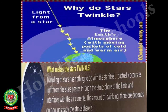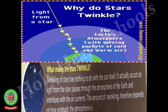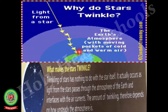Stars are generally spherical in shape, but they appear to be twinkling. This twinkling is due to atmospheric refraction — stars twinkle due to refraction of light. The light coming from a star has to cover a very large distance, and when it enters the atmosphere of Earth, it suffers multiple refractions due to different densities of different layers of Earth's atmosphere. Due to this, the light follows a zigzag path, and the star which is actually spherical in shape appears to be twinkling.